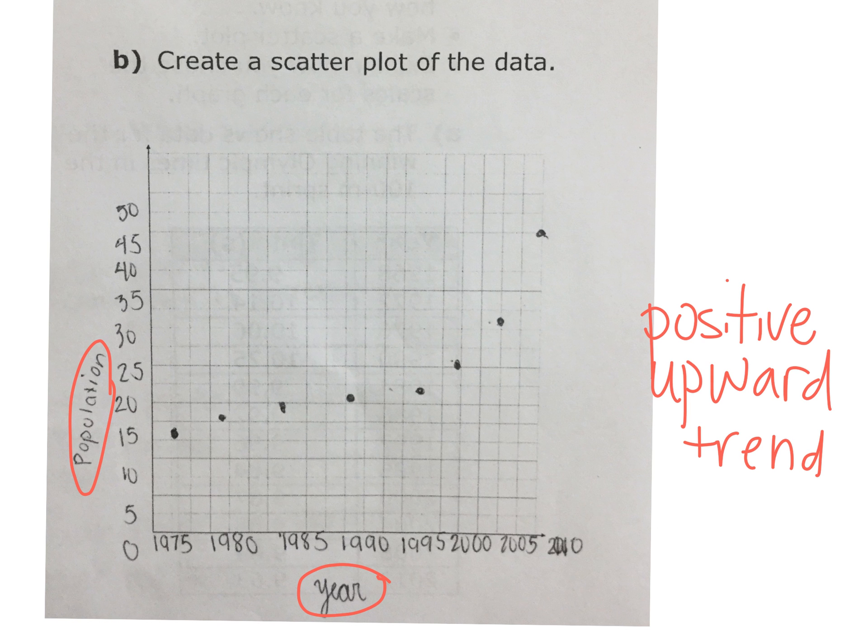So because it's positive and upward, that means that as year is increasing, as time is passing, what happens to the population? It increases. So every year that passes, the population in this town gets larger. In the graph, and let's follow the scale, 2005, 2010, 2015.